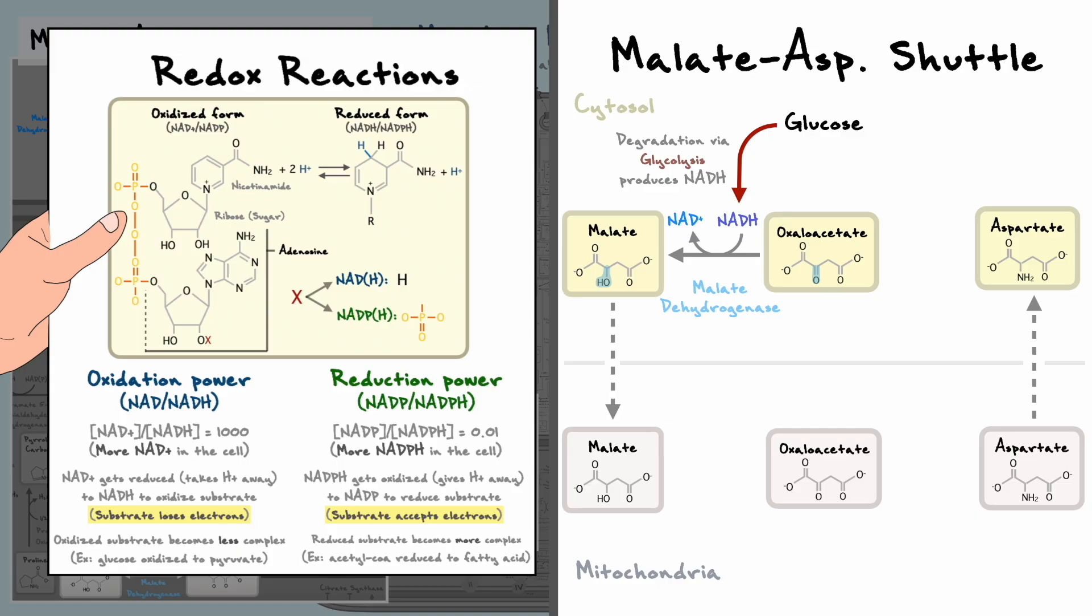My personal tip to remember more easily this terminology is to think about the complexity instead of the electrons. A loss in complexity represents an oxidation and a gain in complexity represents a reduction. Since NADH is less complex than NAD+, it gets oxidized and the inverse logic applies to oxaloacetate.